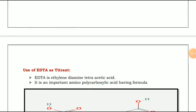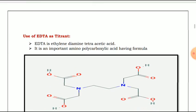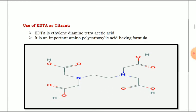First, we will see the use of EDTA as a titrant — that means EDTA solution is filled into the burette. EDTA is Ethylenediamine Tetraacetic Acid. It is an important amino polycarboxylic acid. This is the structure of EDTA, consisting of 2 blue-colored nitrogen atoms and a total of 8 oxygens with 4 OH groups. Instead of writing the whole structure, a short formula H4Y is used.